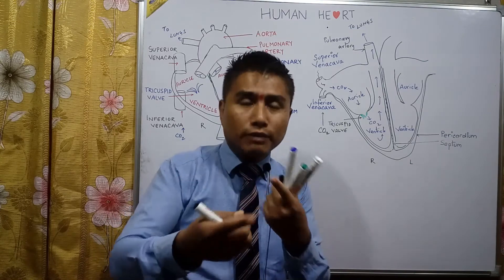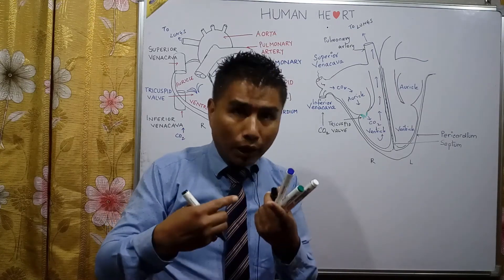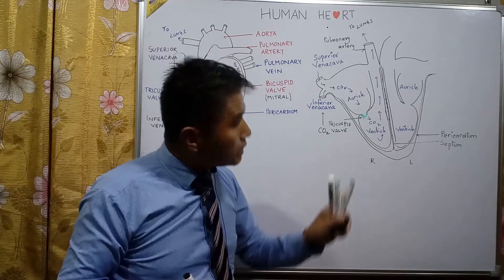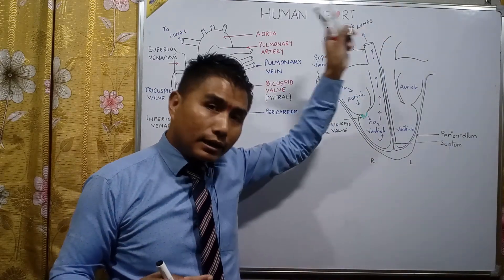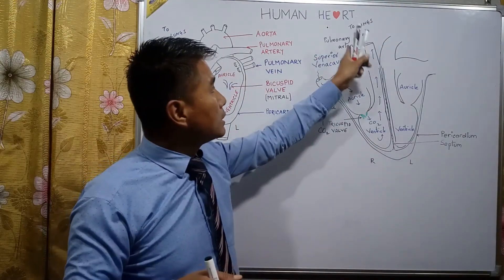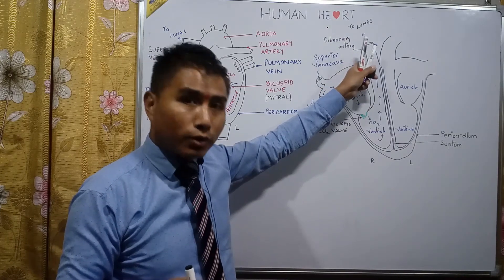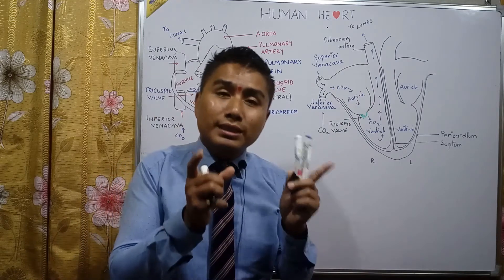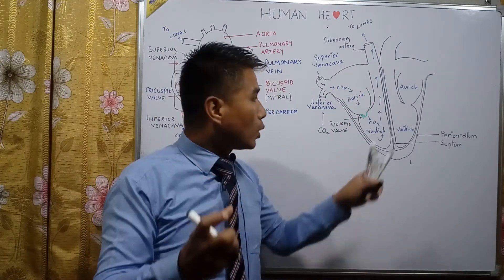For the exchange of gases and the purification of the blood, the carbon dioxide-containing blood is rushed to the lungs by the pulmonary artery. This blood vessel is called an artery because it has to withstand the immense pressure of the ventricle — so it must be strong and elastic.